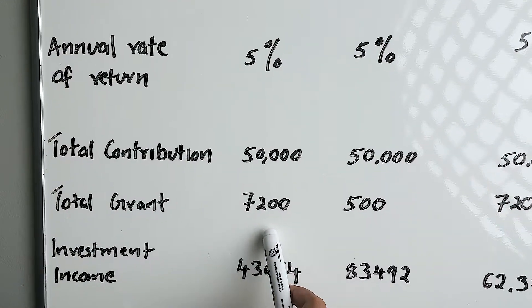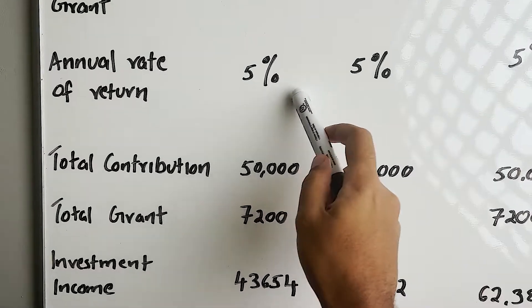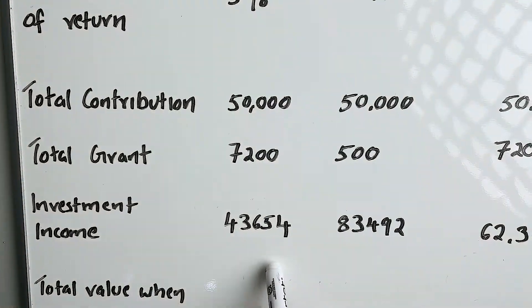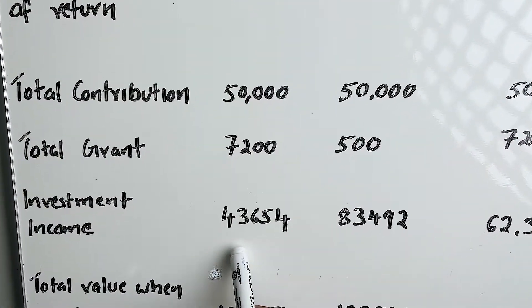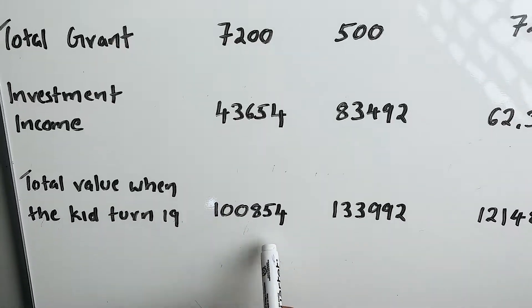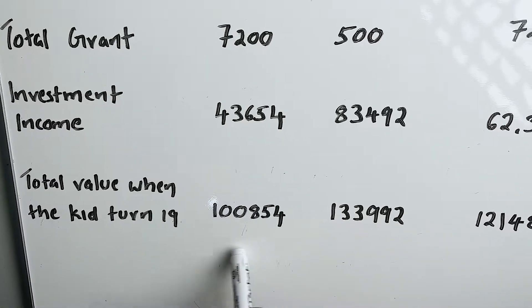When the kid turns 19, at a 5% annual return, this investment can bring $43,654 and our total RESP will have a balance of $100,854.